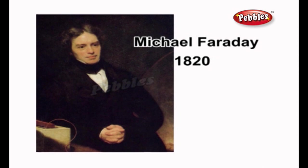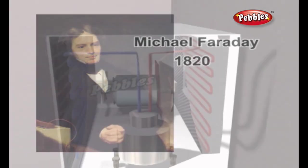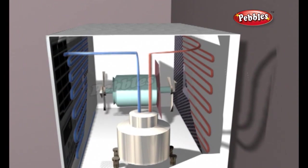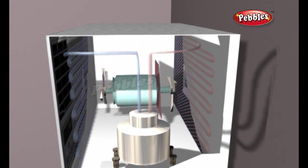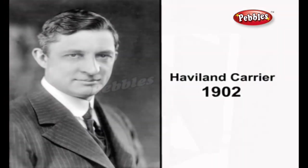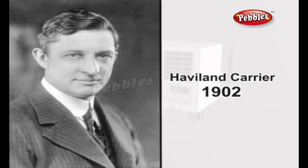In 1820, British scientist and inventor Michael Faraday discovered that compressing and liquefying ammonia could chill air when the liquefied ammonia was allowed to evaporate. In 1902, the first modern electrical air conditioning was invented by Willis Havilland Carrier in Syracuse, New York.